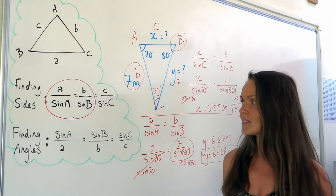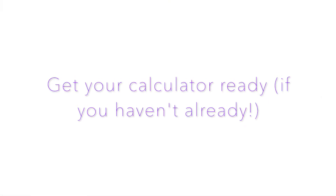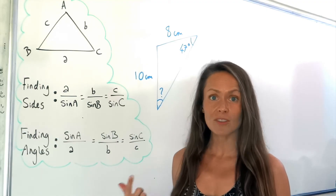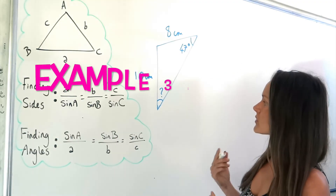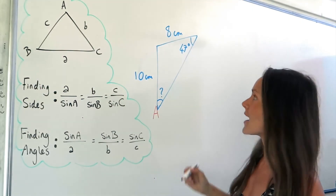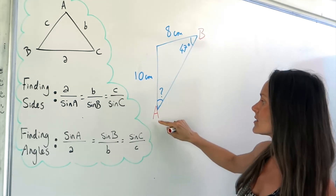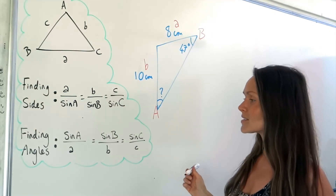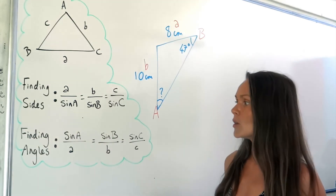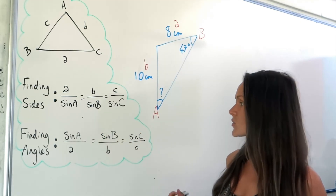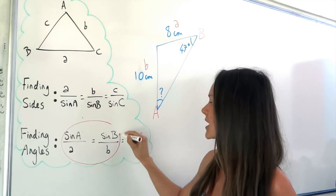So that's calculating sides. In the next example we're going to find an angle. This time we're using the angles-as-numerators version of the sine rule. It's very similar to the previous examples — there's just going to be one more step at the end. I'll label this angle A and this angle B, which means this is side A and this is side B.